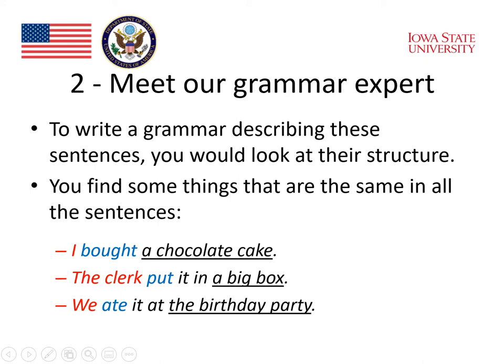So each one of the sentences has a person or subject at the beginning. In the middle, there's a verb that indicates some action. Then at the end, there's a noun phrase that has three parts: a noun, an adjective, and an article or a determiner.